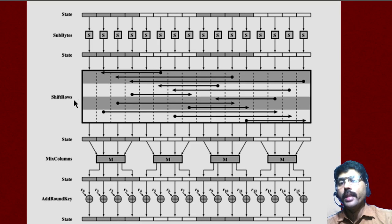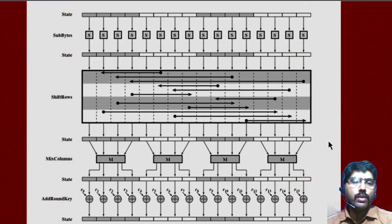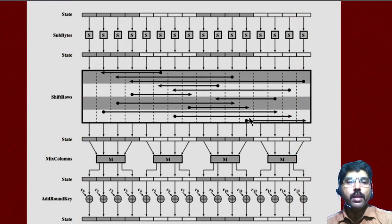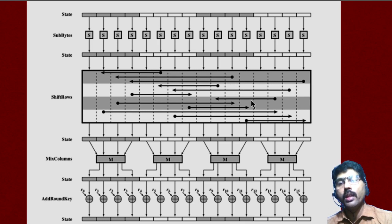Now we go to the next step, called shift rows. Shift row is actually a simple permutation that is performed row by row. Each row is shifted to different positions. The first row goes to the last, the last row goes to the first, and so on — it shifts the rows. That is called shifting the rows.